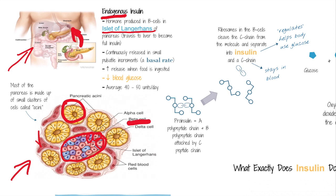The beta cells are kind of continuously releasing these pulsatile increments of insulin. We call that pulsatile release throughout the day a basal rate. So when you hear somebody say basal rate, that's what they're talking about — just that low underlying release of insulin happening all day. On top of that, the body releases insulin as a response whenever there is a lot of glucose in the blood.